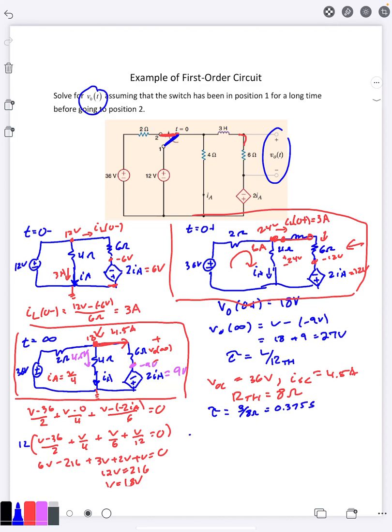So we can finally figure out our K1 and K2. V0 of infinity is going to be your K1, is going to be 27. V0 of 0 is K1 plus K2. It's supposed to be 18. As we know, K1 is 27. K2 is negative 9. And after our final answer, after all that work, it's going to be 27 minus 9 e to the negative t over 0.375. And our answer is in terms of volts.